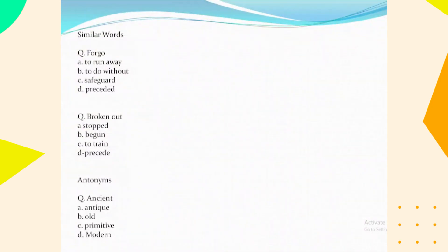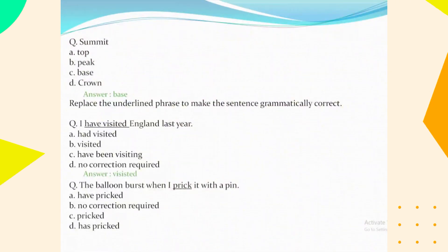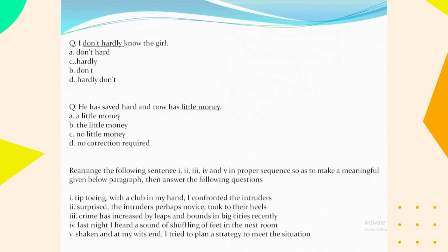English section. Similar word for 'forgo': to do without. Past participle of 'break out': begun. Antonym of 'transient': modern. Antonym of 'summit': base. Replace the underlined phrase to make the sentence grammatically correct: 'I have visited England last year' — the correct answer is 'visited'. 'The balloon burst when I pricked it with a pin' — the underlined word is 'pricked' and the correct answer is 'pricked'. 'I don't hardly know the girl' — the correct answer is 'hardly'. 'He has saved hard and now has little money' — but the correct answer is 'a little money'.